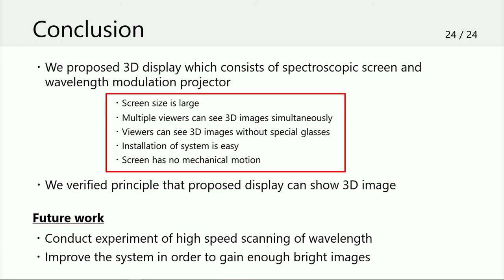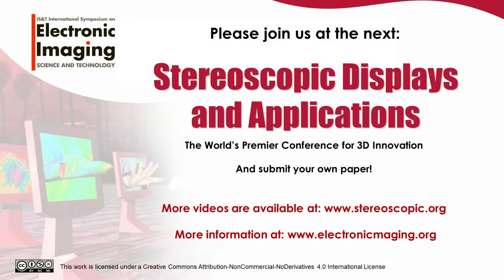Finally, let me summarize my presentation. We proposed a 3D display which consists of a spectroscopic screen and a wavelength modulation projector, with features of large screen, no special glasses, easy installation, and no mechanical motion. We verified the principle that the proposed display can show 3D images with different colors depending on viewing point. As future work, we will conduct experiments on high-speed scanning of wavelengths, verify crosstalk of images, and improve the system to gain sufficiently bright images. Thank you for listening.